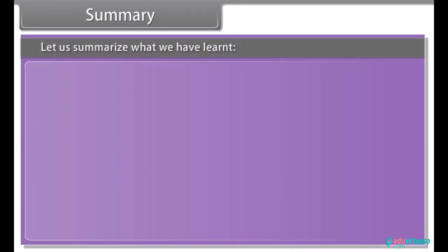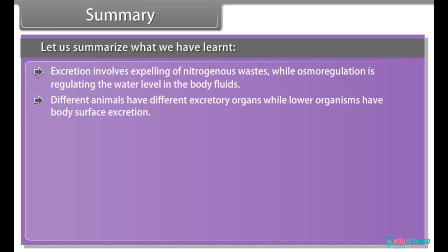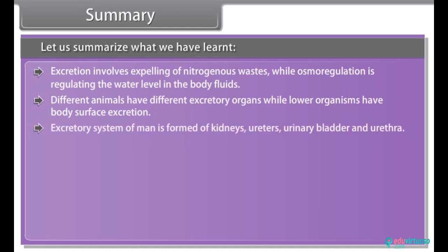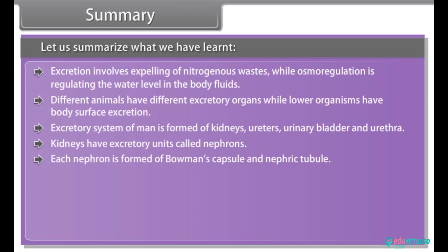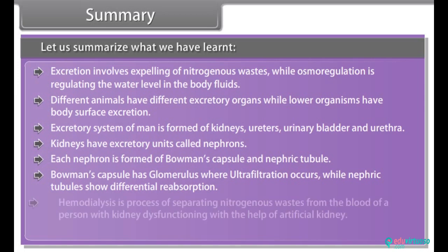Excretion involves expelling of nitrogenous wastes, while osmoregulation is regulating the water level in body fluids. Different animals have different excretory organs, while lower organisms have body surface excretion. The excretory system of humans is formed of kidneys, ureters, urinary bladder, and urethra. Kidneys have excretory units called nephrons; each nephron is formed of Bowman's capsule and nephric tubule — the glomerulus performs ultrafiltration while nephric tubules show differential reabsorption. Hemodialysis separates nitrogenous wastes from the blood of a person with kidney dysfunction using an artificial kidney. In plants, oxygen and excess water are released through stomata.